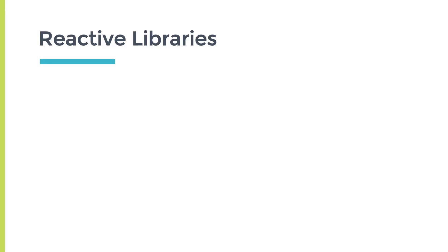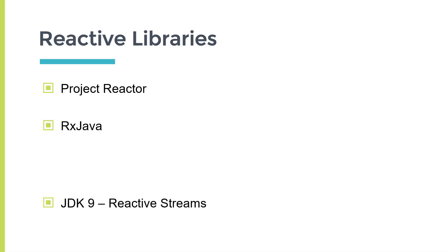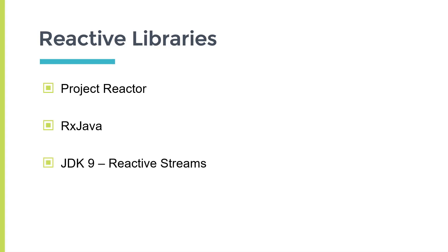There are a couple of reactive libraries available for Java. The first is Project Reactor, another one is RxJava, and JDK9 itself provides reactive streams. In this course, we will use Project Reactor, because it is recommended to use Project Reactor with Spring Boot.